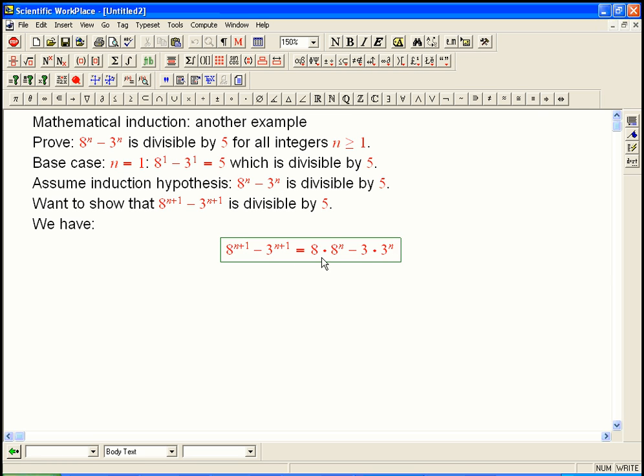But this isn't just some number times 8^n - 3^n. In particular, it's not 5 × (8^n - 3^n), which would be great. If you could just factor out the 8 and the 3 and somehow pretend they're both 5, that'd be pretty cool.